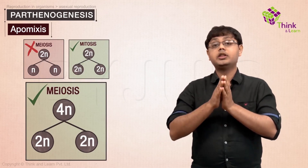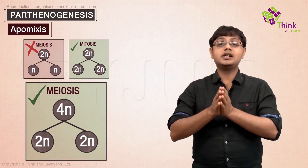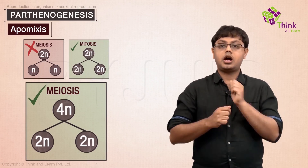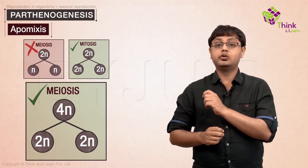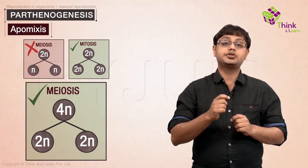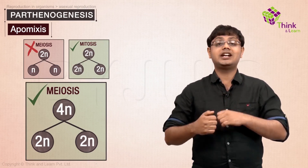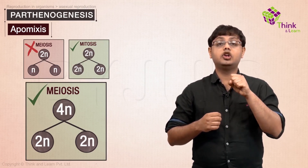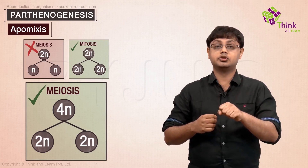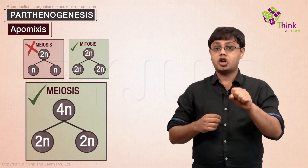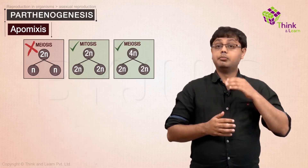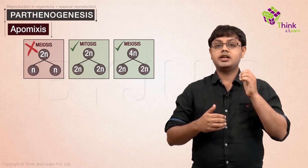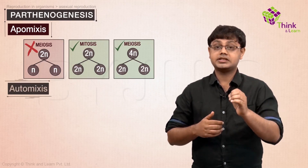Another way is to double the number of chromosomes before meiosis happens. So when the ploidy halves, the result is still a diploid oocyte. Clones are produced here because recombination and segregation take place between the identical homologous chromosomes, not different ones.